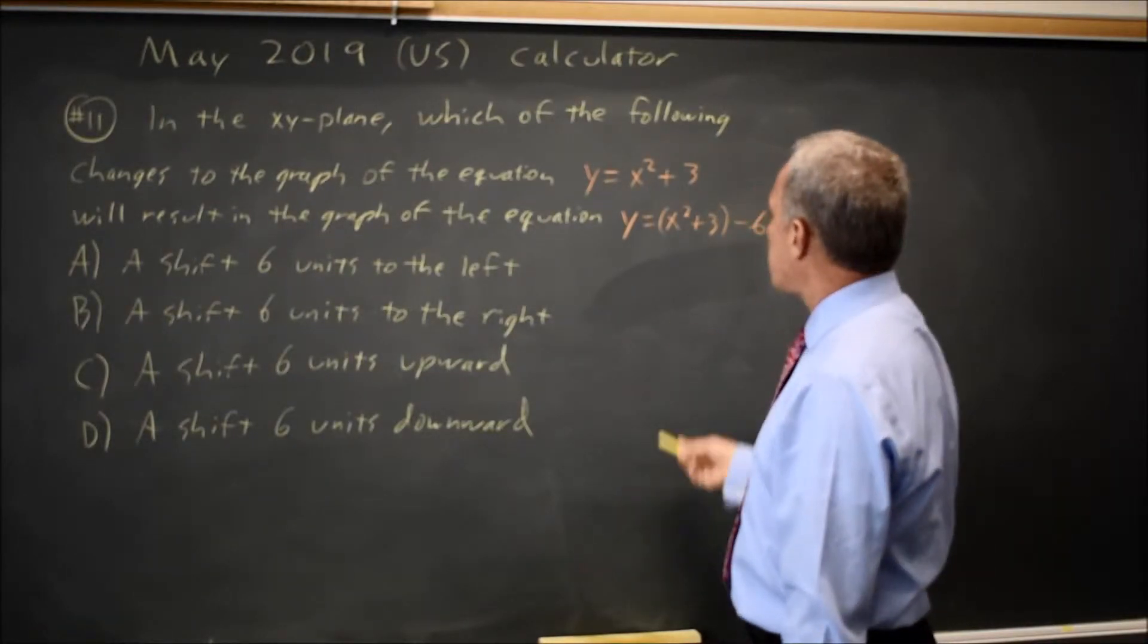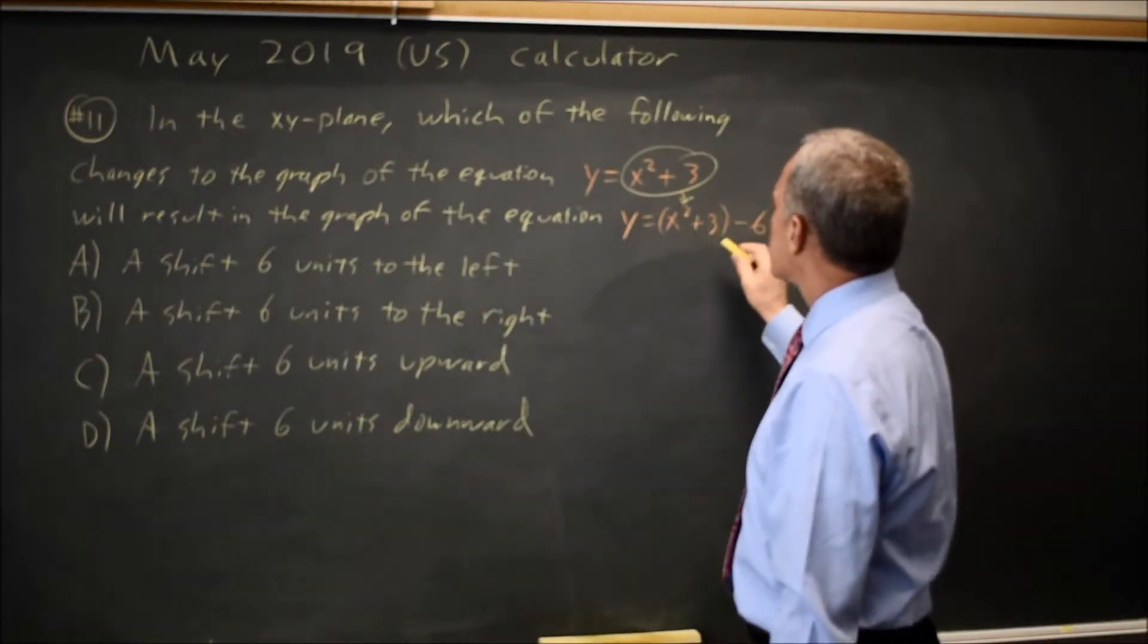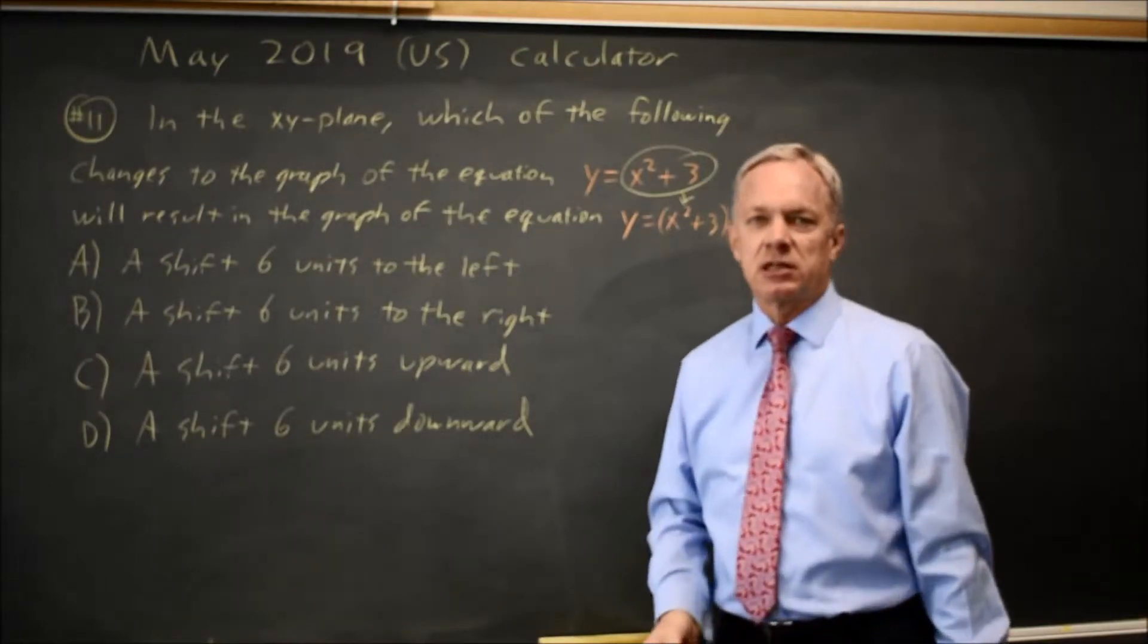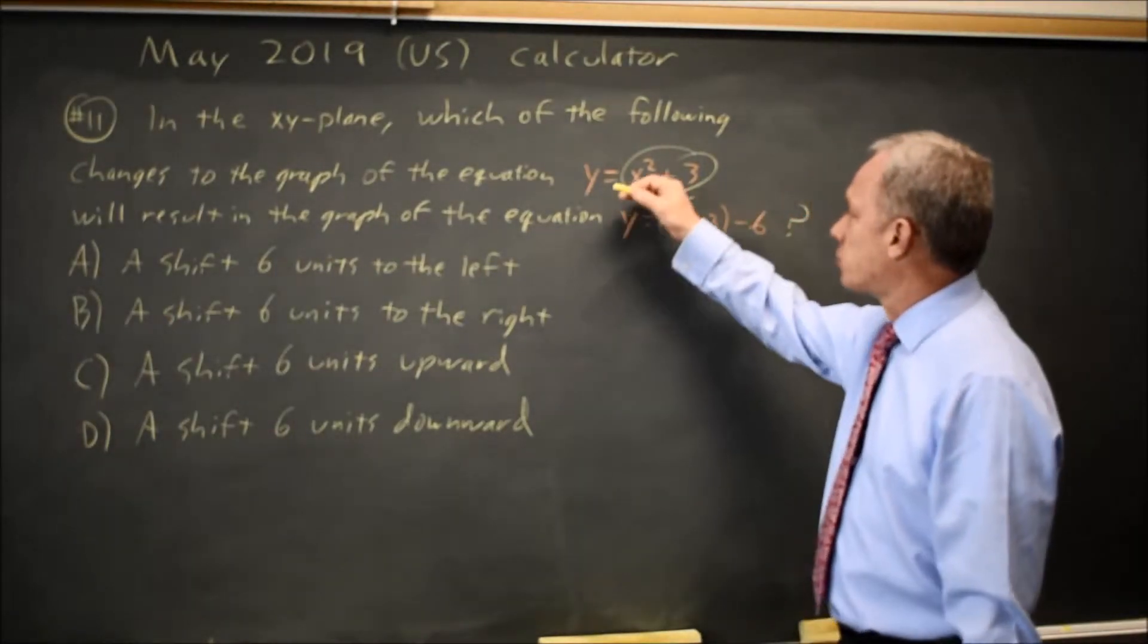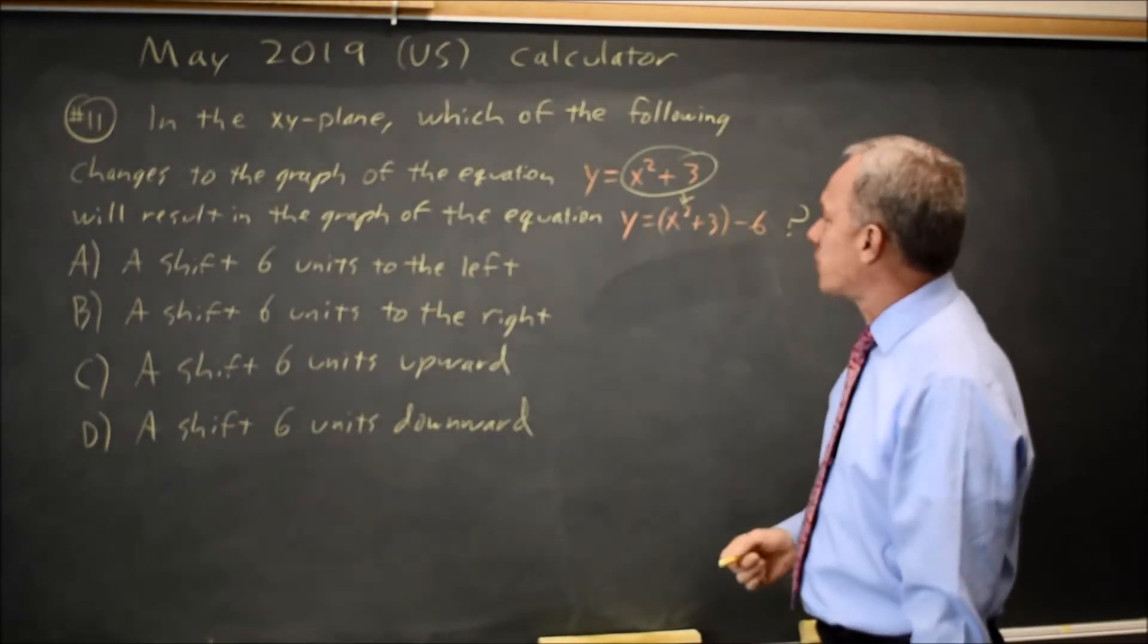All they've done is taken our X squared plus 3 quantity, put it in parentheses, and then subtracted 6. That means our Y value is the previous Y value, and then subtract 6 from that.